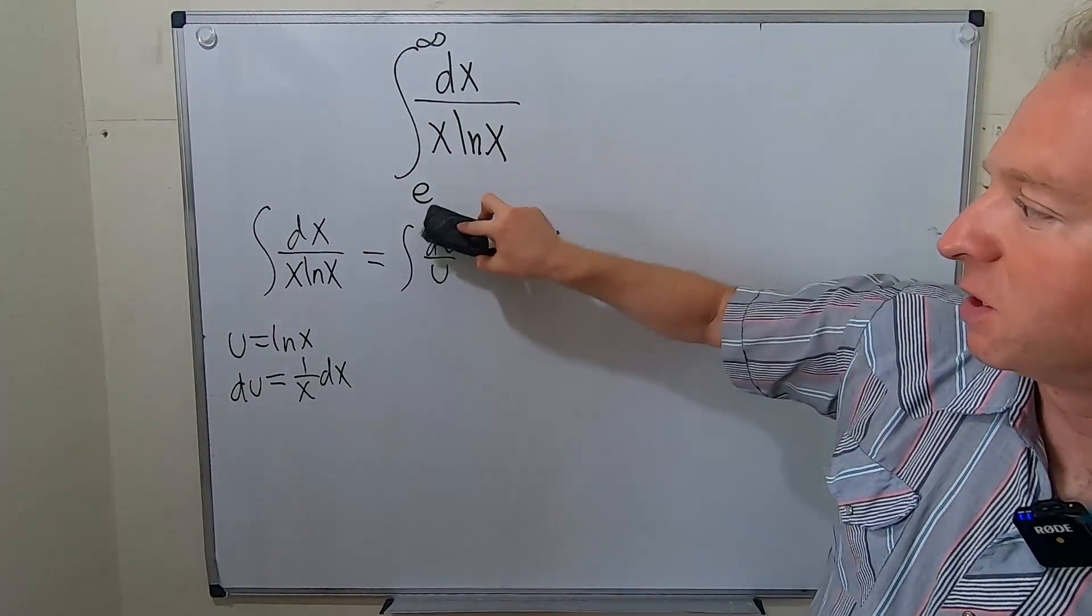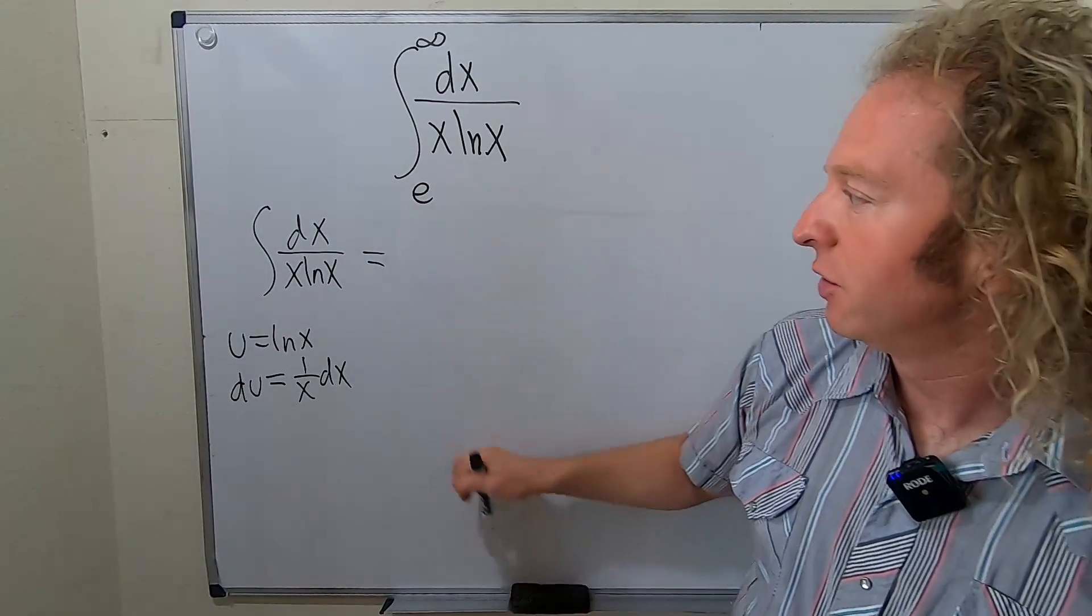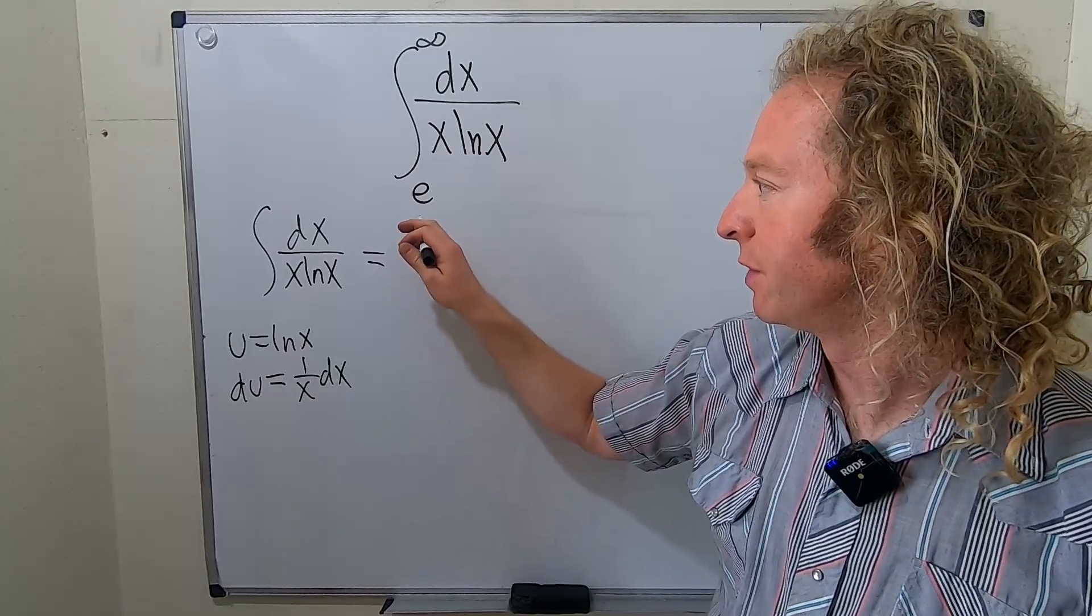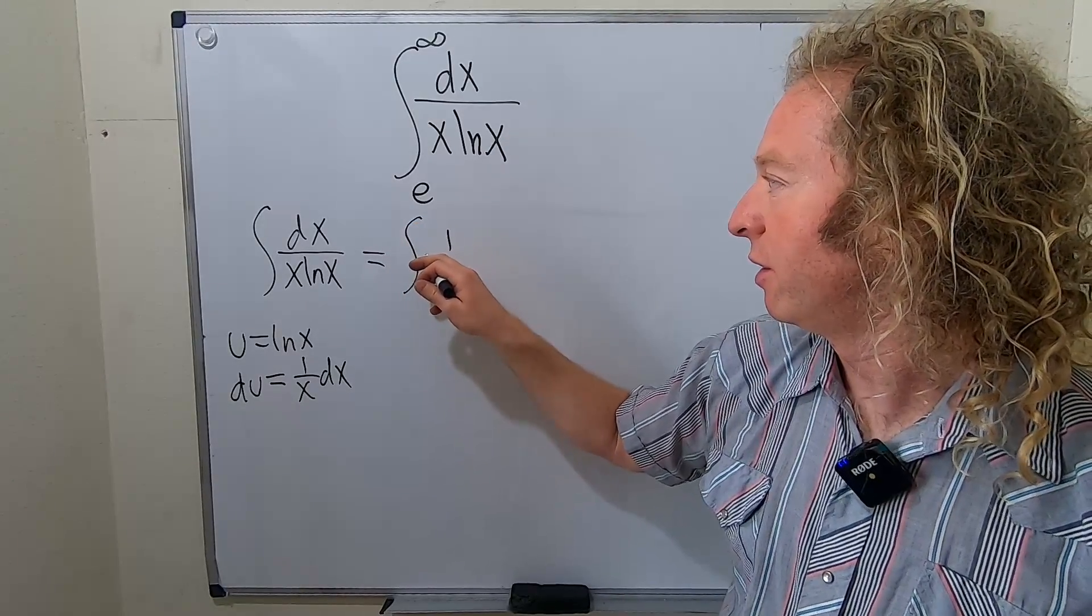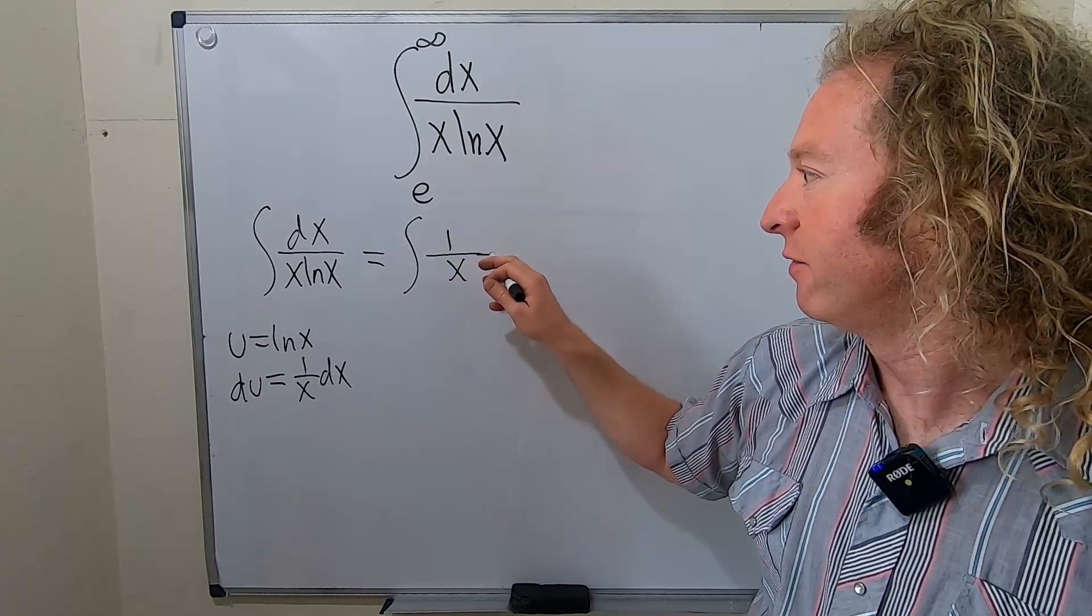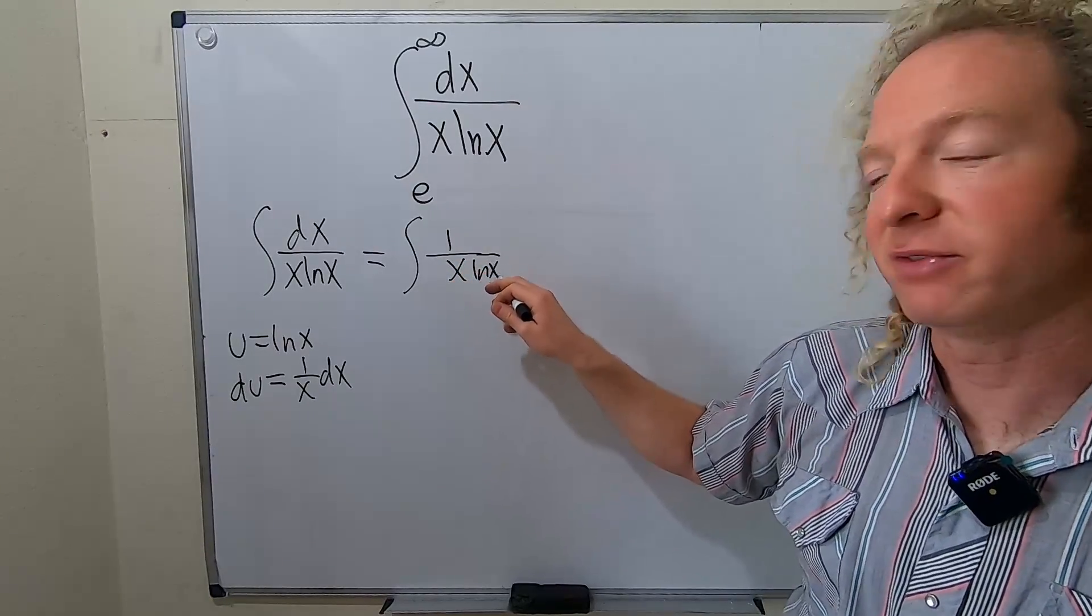So how did I do that? Let me explain a little bit more clearly. So you can think of this as follows: it's really 1 over x and then here you have your ln x and then here you have dx.